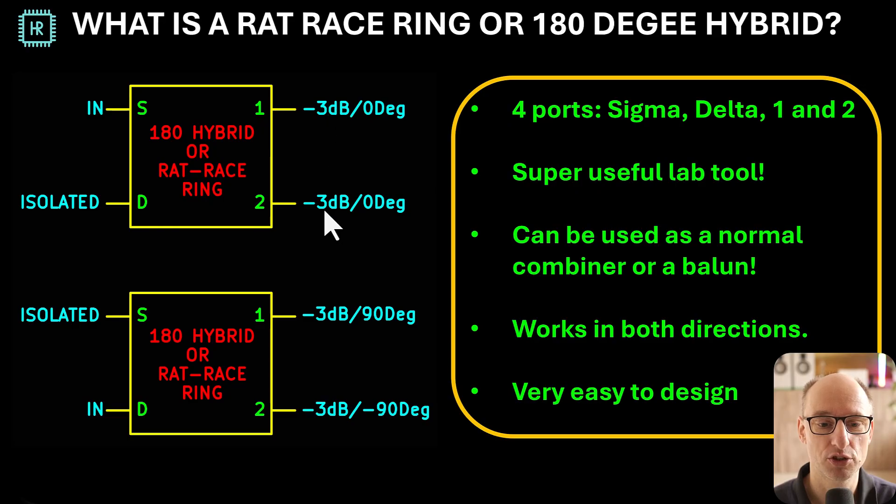You input the signal at the sigma port and at port 1 and 2 you get minus 3 dB out in phase, and the delta port is isolated. You can also use it in the delta mode. There you put the signal in the delta port. You also get 3 dB lower signal level at port 1 and 2, but they are 180 degrees out of phase: 90 minus 90, or you could say 0 and 180.